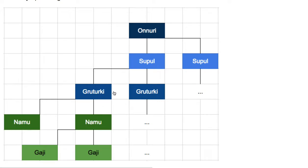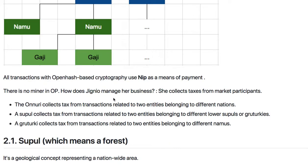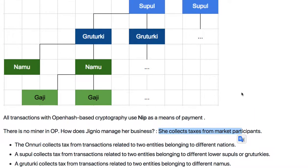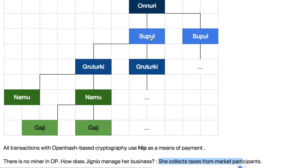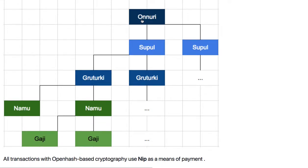How do they make money? They collect taxes from market participants. As I mentioned, the entire openership platform is managed by sovereignty — a governmental service. Government has taxation power over its citizens. So NAMU collects taxes from gazis, Grootgi collects taxes from gazis, Supul — whether local government, central government, or a world organization — can also impose taxes on market participants.